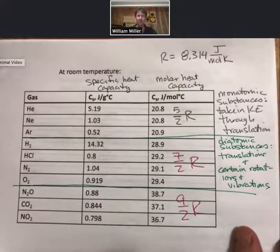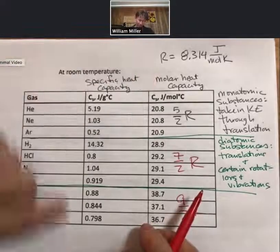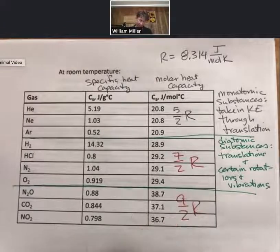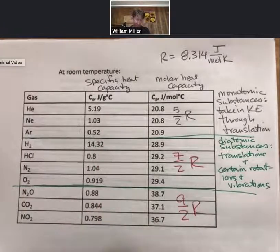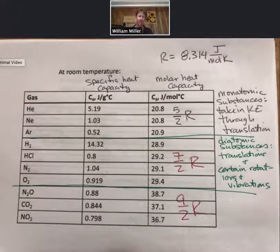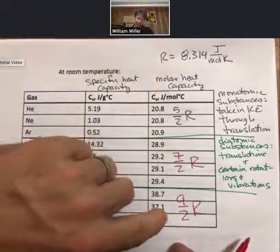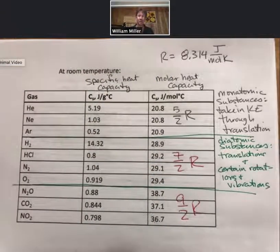Without looking at molar heat capacity, the specific heat capacity numbers can look quite different and don't show clear trends. But by looking at molar heat capacity, we can understand what's happening on an atomic or molecular basis — which is really illuminating.